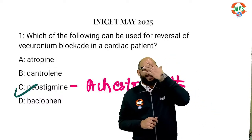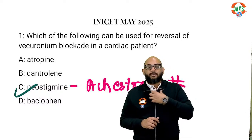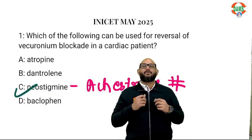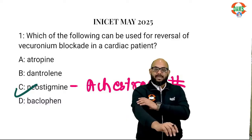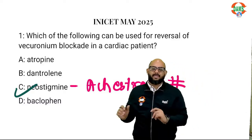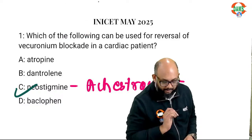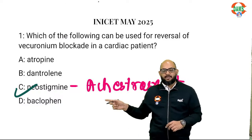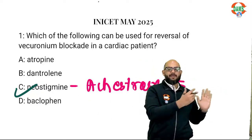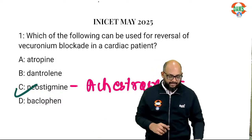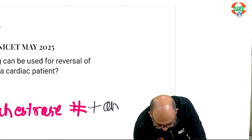Muscarinic receptors are in the parasympathetic nervous system, and muscarinic acetylcholine receptor activation causes all the things you see in organophosphorus poisoning — lacrimation, nasal stuffiness, salivation, bronchospasm, bradycardia, colic, urinary retention, and defecation. So would you ever use neostigmine alone? The patient will start moving muscles but will have a lot of muscarinic complications. So you always combine it with an anticholinergic.